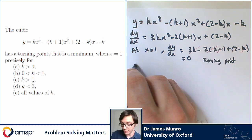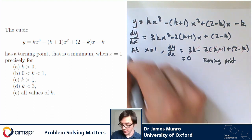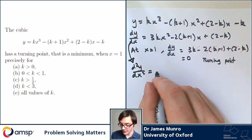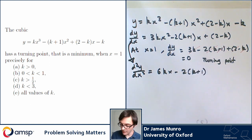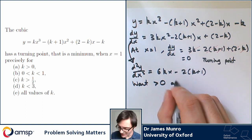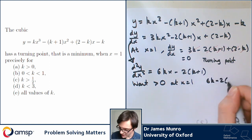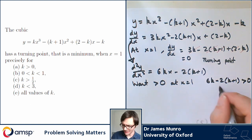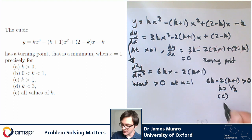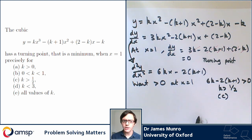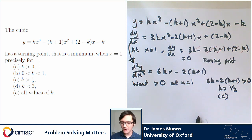We're not done yet, because we want this to be a minimum. To check that, I need the second derivative. d²y/dx² = 6kx − 2(k+1). I want that to be positive for a minimum. Plugging in x = 1: 6k − 2(k+1) = 6k − 2k − 2 = 4k − 2 > 0, which gives k > 1/2. So the answer is option C. This question is a little unusual — instead of finding turning points of a cubic, it asks you to work backwards from properties of the cubic to conditions on its coefficients.